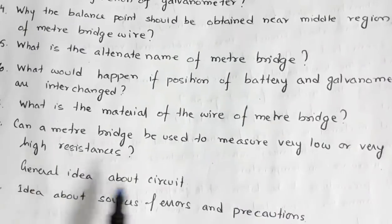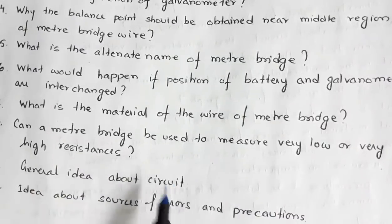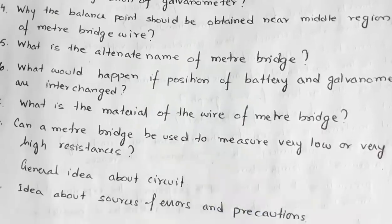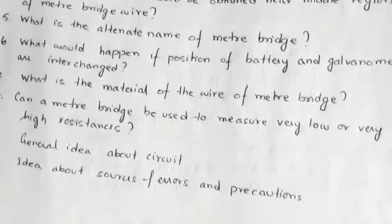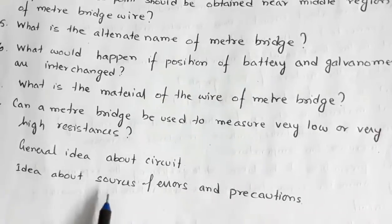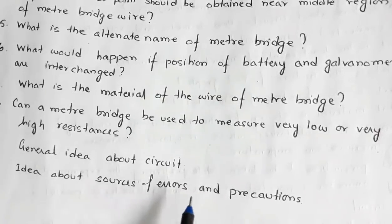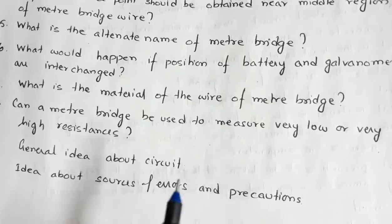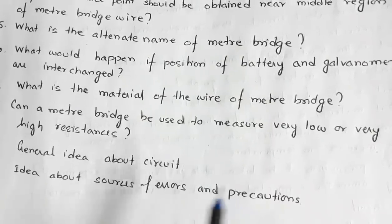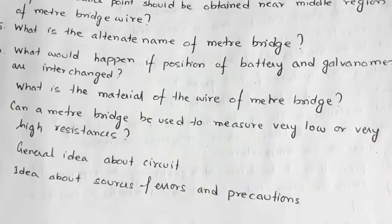You must be able to draw the circuit and explain the components used in the circuit. You may also be asked about general ideas regarding sources of errors and precautions — what are the sources of errors and what precautions are involved in conducting the experiment.